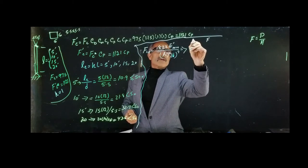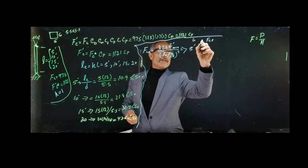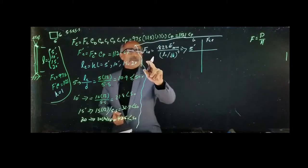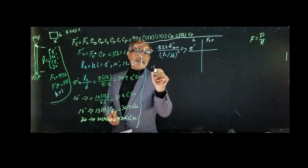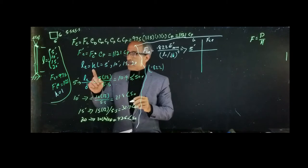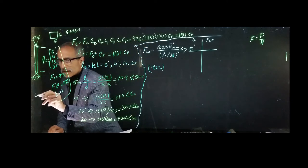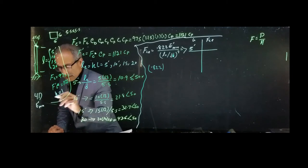We'll make a chart for LE and Fce. From the table, E'min came out to 580,000 psi, since E'min equals E times the adjustment factors (CM, Ct, etc.) which all become 1.0, giving E'min = 580,000 psi.